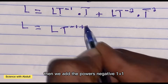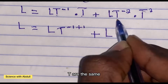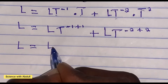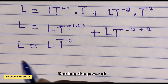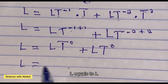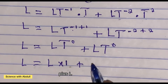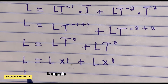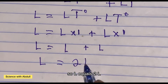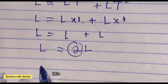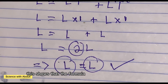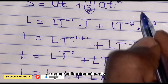For the first term, negative 1 plus 1 gives T to the power of 0. For the second term, negative 2 plus 2 gives T to the power of 0. So L equals L times T to the power of 0, plus L times T to the power of 0. Since T to the power of 0 equals 1, this gives L equals L plus L, which is 2L. Since 2 is a constant and dimensionless, we neglect it, giving L equals L. The left side equals the right side, so the formula s equals u t plus one-half a t squared is dimensionally correct.